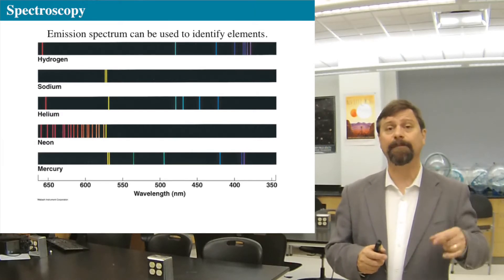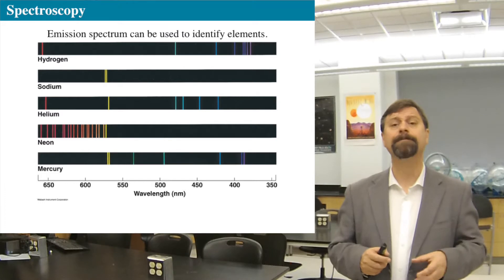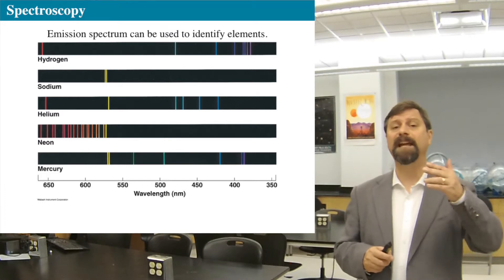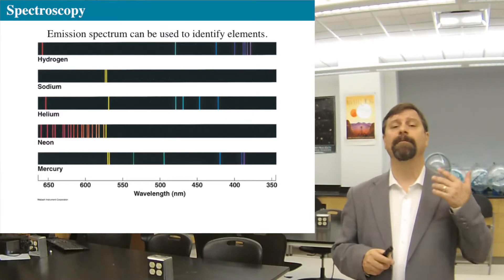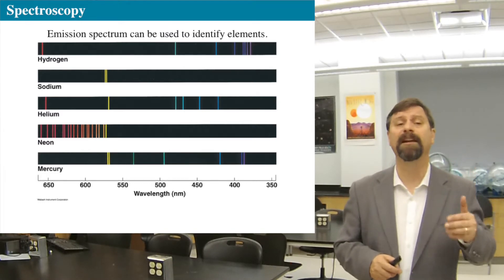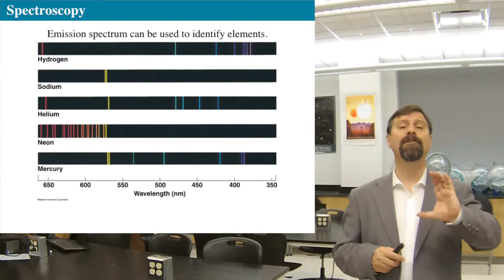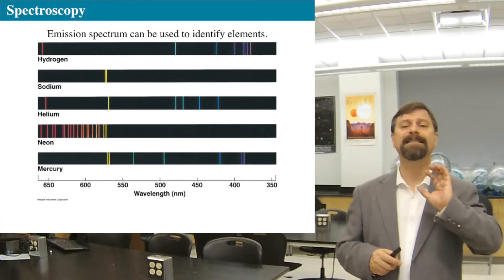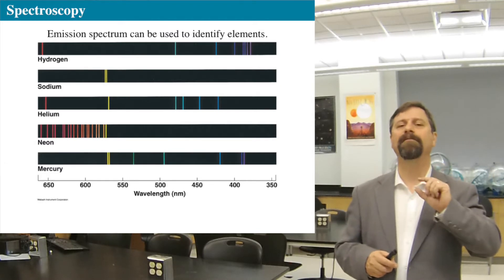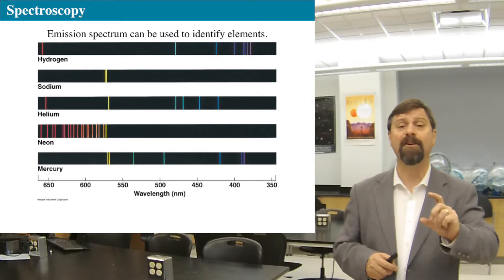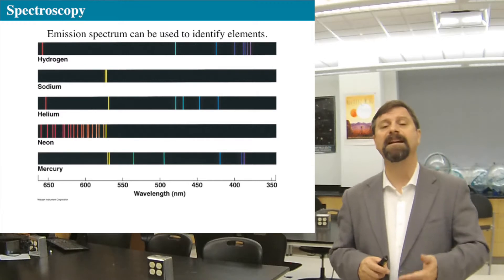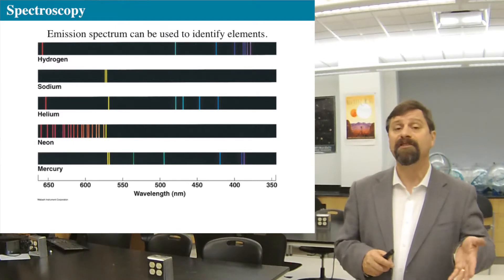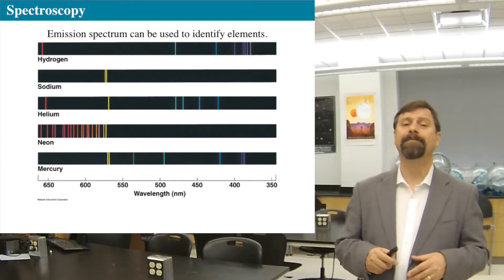The flame coming off the Bunsen burner will have a particular wavelength, and looking at the light coming off the burning salt, you get a specific set of wavelengths — and those are emission spectra.